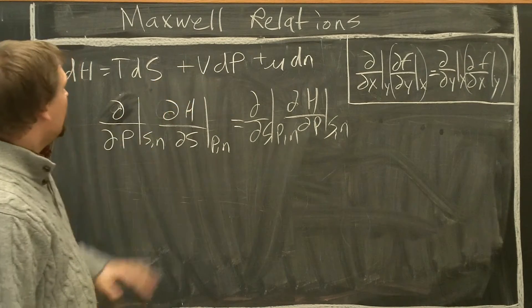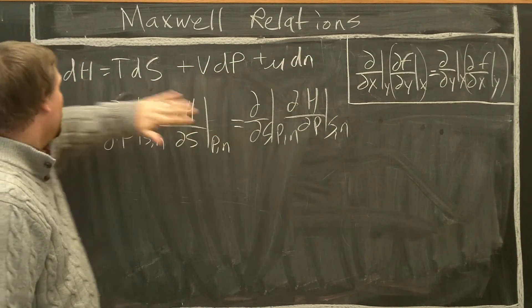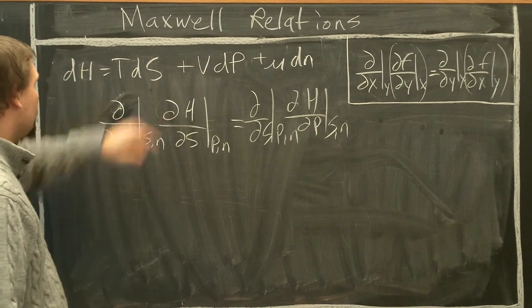So dH/dS at constant P, constant P and N. dH/dS at constant P is T.